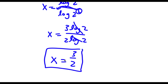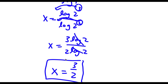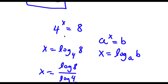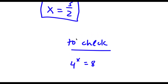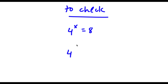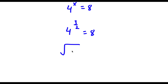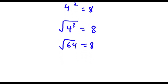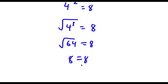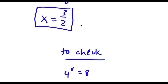So that's two methods of solving this problem. Now to check: I have 4 to the power of x is equal to 8. We know that x equals 3 over 2, so I have 4 to the power of 3 over 2 is equal to 8. Now 4 to the power of 3 over 2 is the same thing as the square root of 4 to the power of 3. 4 to the power of 3 equals 64, so I have the square root of 64 equals 8, and the square root of 64 is indeed 8. So 8 equals 8 — my solution is correct.